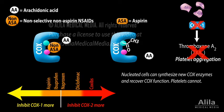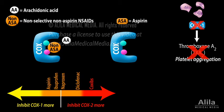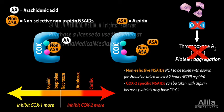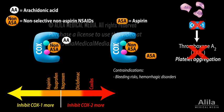This makes aspirin stand out as a potent antithrombotic agent. In fact, aspirin is commonly prescribed to reduce risk of blood clot formation, as a preventative measure for heart attacks and ischemic strokes. For maximum effect, aspirin should not be taken together with other non-selective NSAIDs, as these will compete with aspirin for a common binding site on platelet COX1. Being antithrombotic, aspirin prolongs bleeding and is therefore contraindicated in patients with bleeding risks or hemorrhagic disorders. Aspirin is also linked to Reye's syndrome.